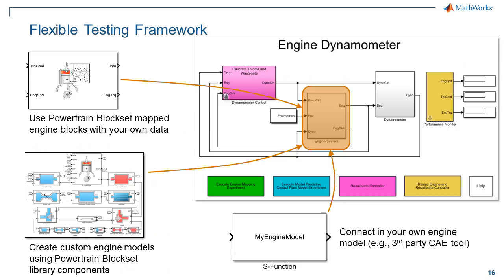The Stateflow charts we provide are particular to our engine, but you can put your own logic in by creating your own Stateflow diagram. Inside the dynamometer, the engine system is just an engine controller and engine plant model. Powertrain Blockset provides a mapped variant using lookup tables from dynamometer data, dynamic engine models you assemble from components like turbochargers, or connections to third-party tools like GT-Power or Ricardo WAVE.